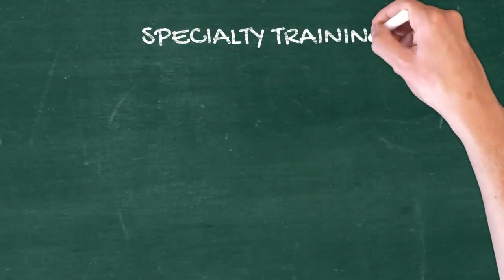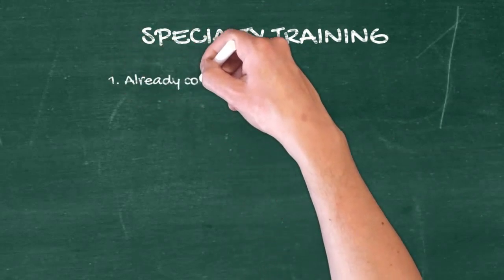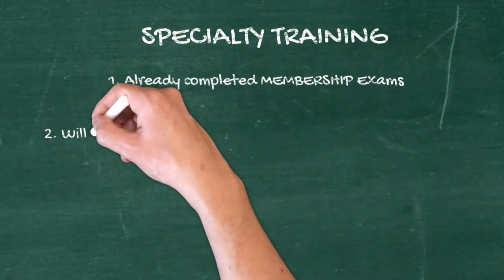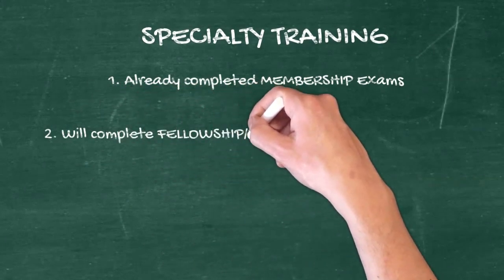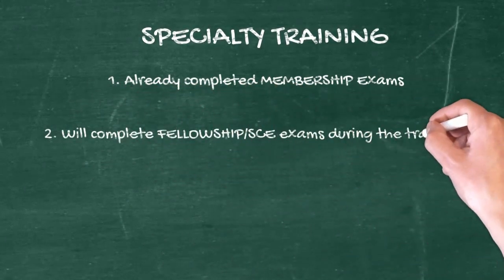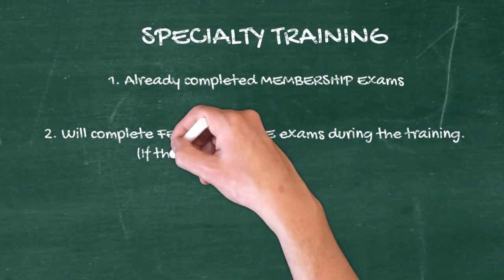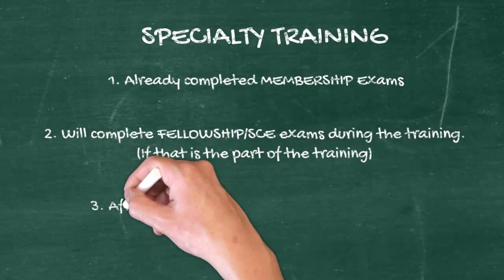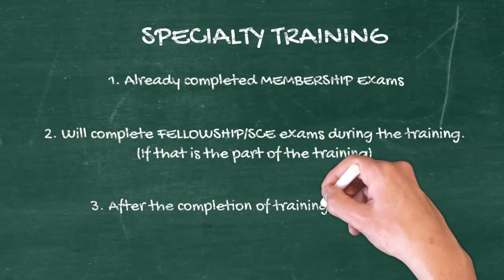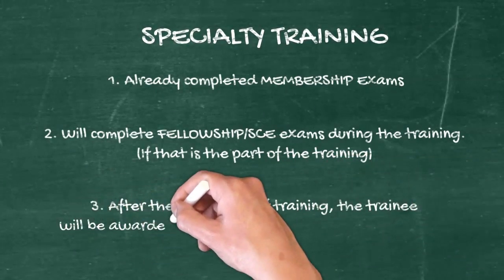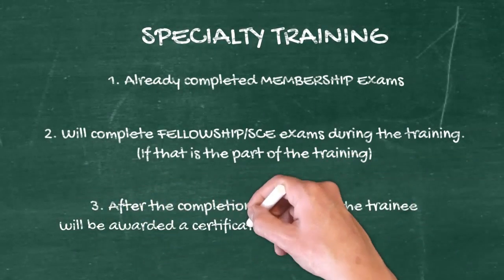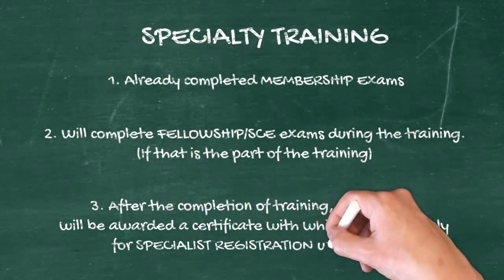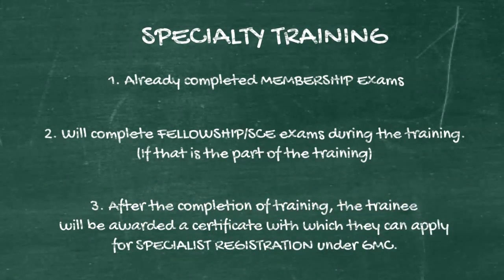So what happens when you are in specialty training? You've already completed the membership exams and the other prerequisites, and then you will complete your fellowship or other exams necessary to complete the training. After completion of specialty training, you will be awarded a certificate by your deanery, with which you can go to the GMC and apply for specialist registration.